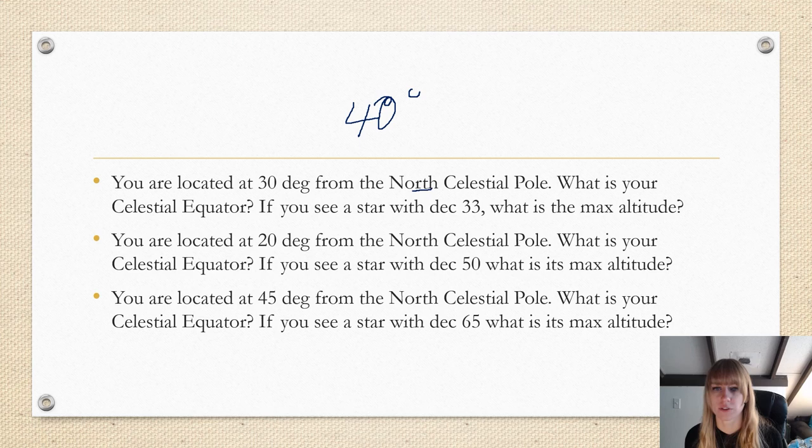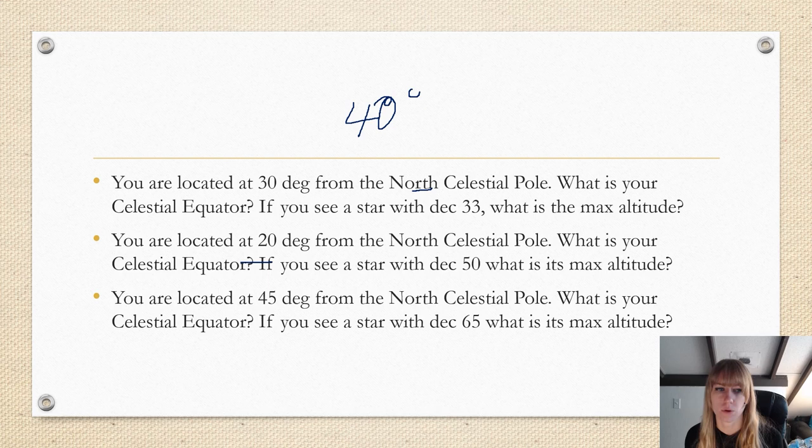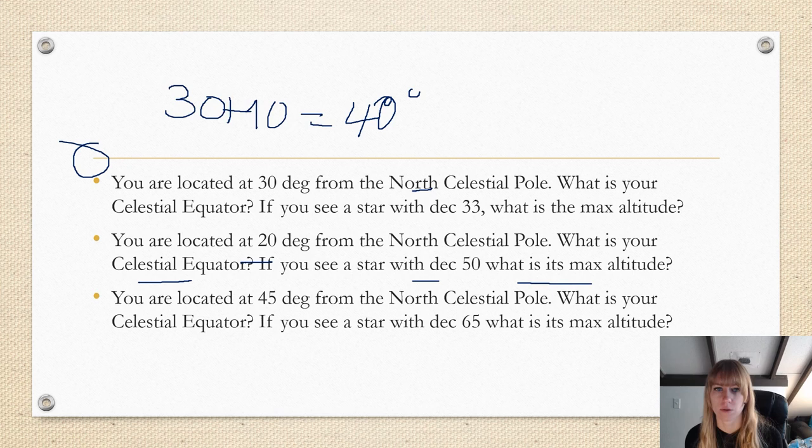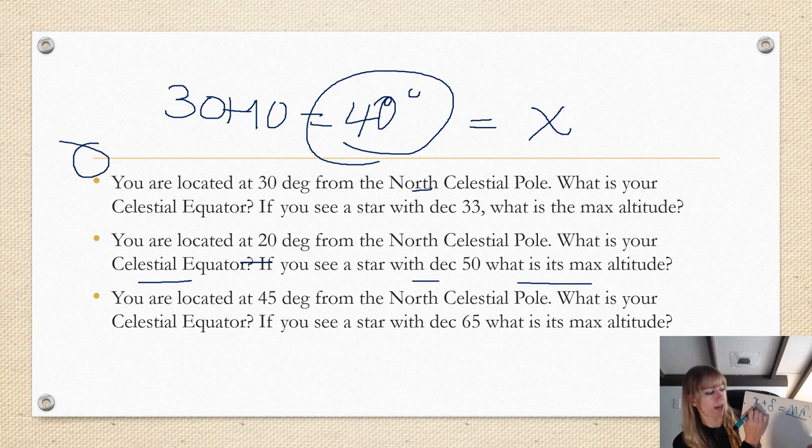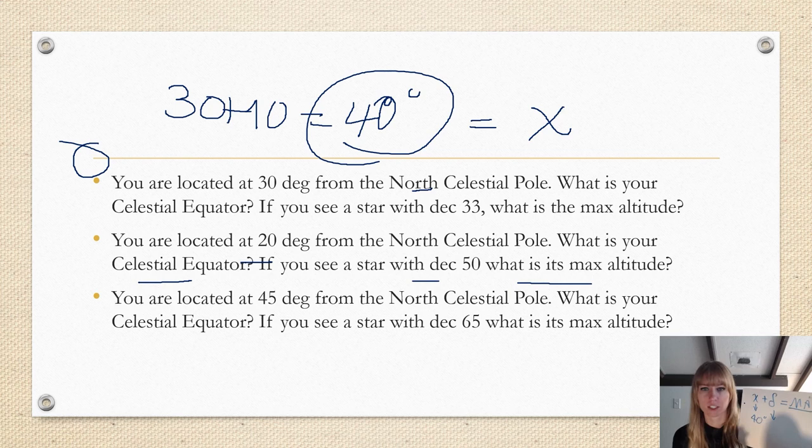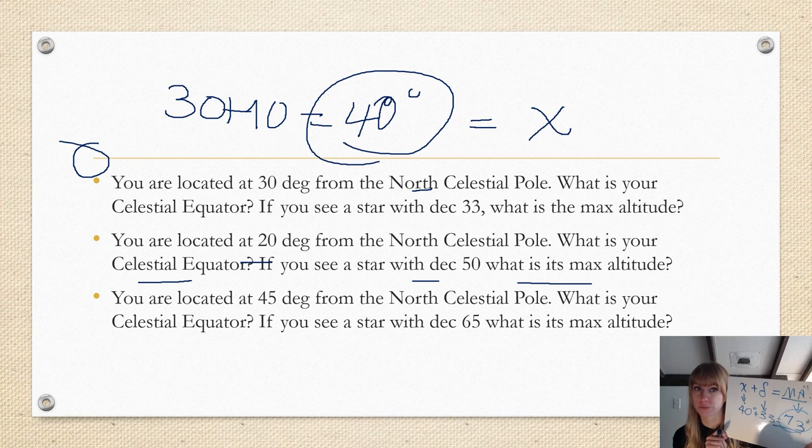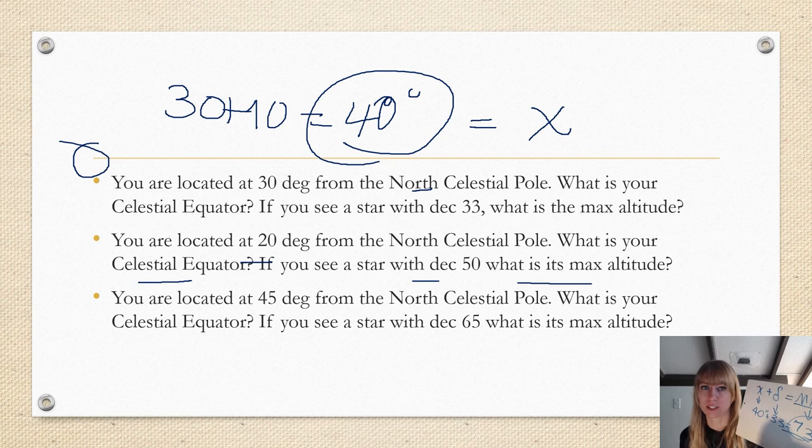If you are located 20 degrees from the north celestial pole, what is your celestial equator? If you see a star with a declination of 50, what is its max altitude? If you are located at 45 degrees from the north celestial pole, what is your celestial equator? If you see a star with a declination of 65, what is its maximum altitude? So I'll do the first one with you. So 30 plus 10 equals 40 degrees. That is our X. So then what do we have to do? We have to do X plus the declination of the star, and that will equal our max altitude. So we have X. X is 40 degrees. Our declination is 33. That means our max altitude is 73 degrees. This is what I need you to do. This is your question for today. You will do all of these, post them up, and then I will follow up with you on the answer. So please make sure that you answer both of these questions.